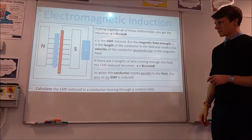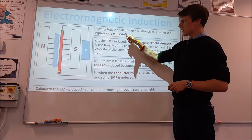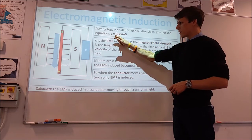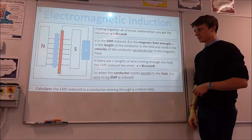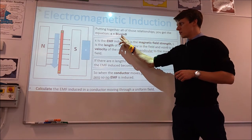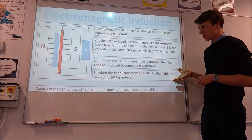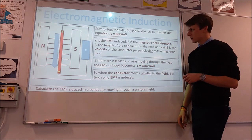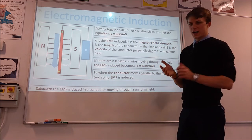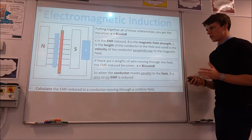Putting those three factors together gives us the equation: EMF = BLV sin θ, where V sin θ is the component of velocity that's perpendicular to the field, B is the field strength, and L is the length of the conductor. When we are moving perpendicular to the field we get maximum EMF, and when we're moving parallel to the field — where θ is zero — we get no EMF induced. Here θ is the angle between the wire and the field.